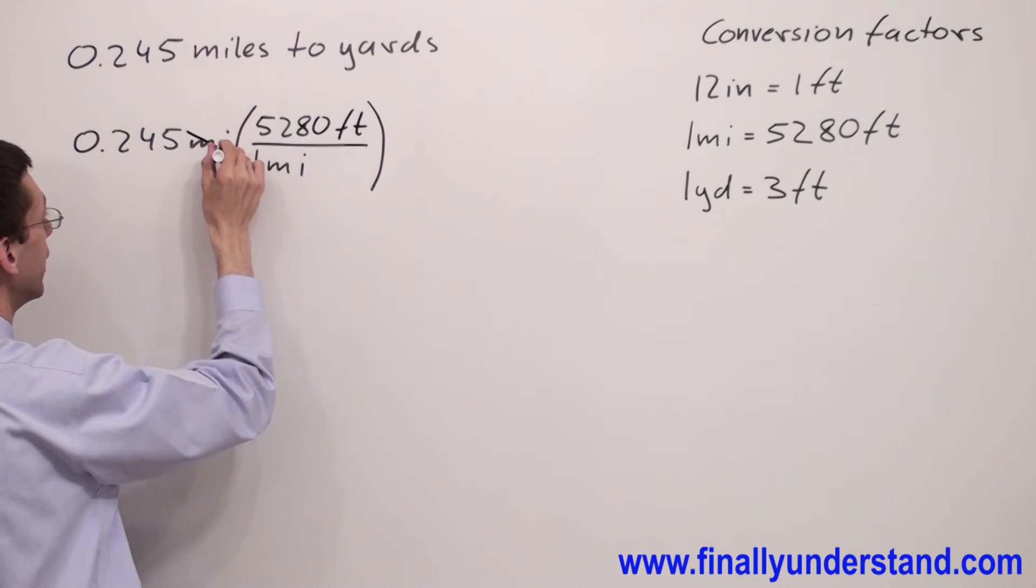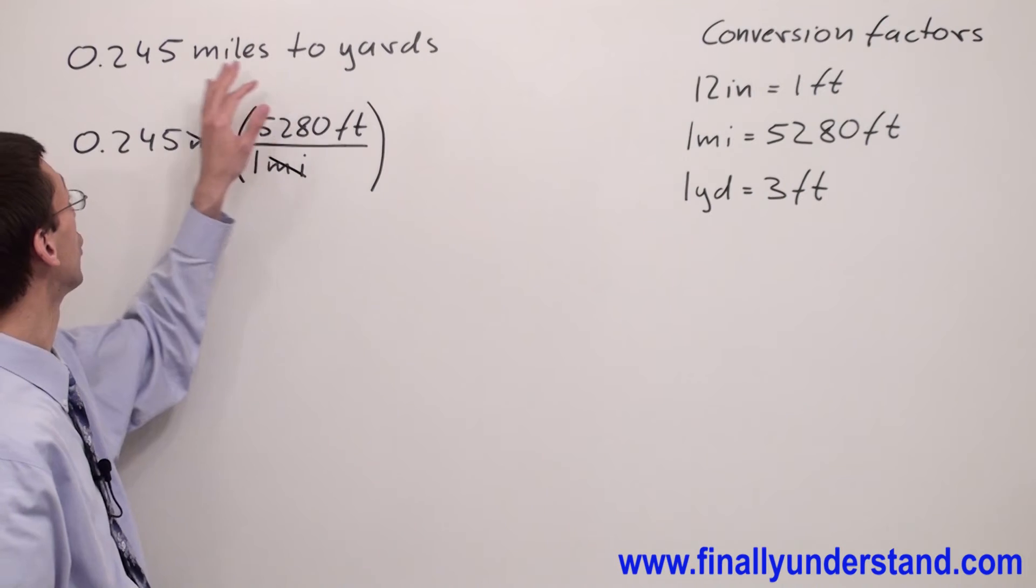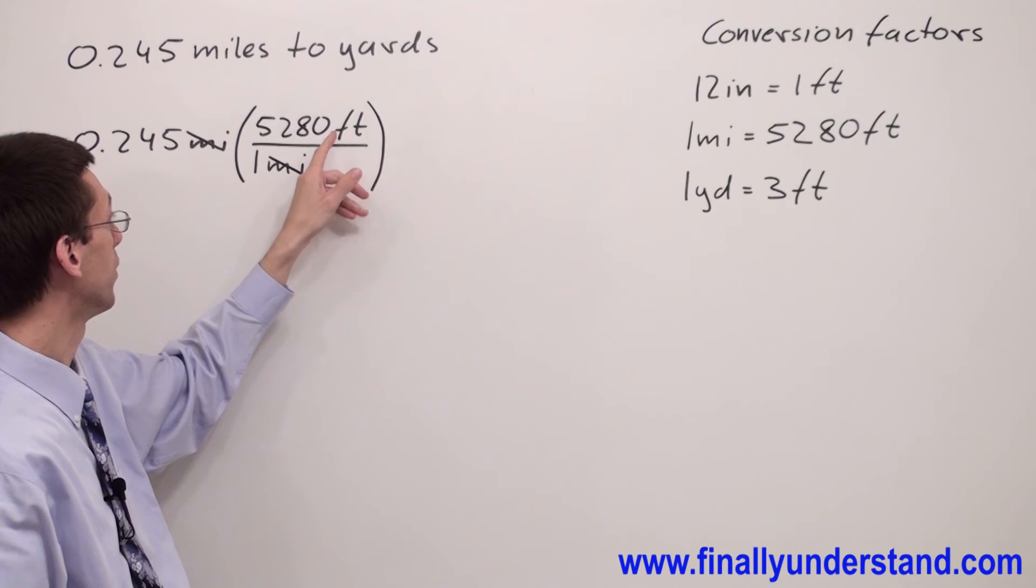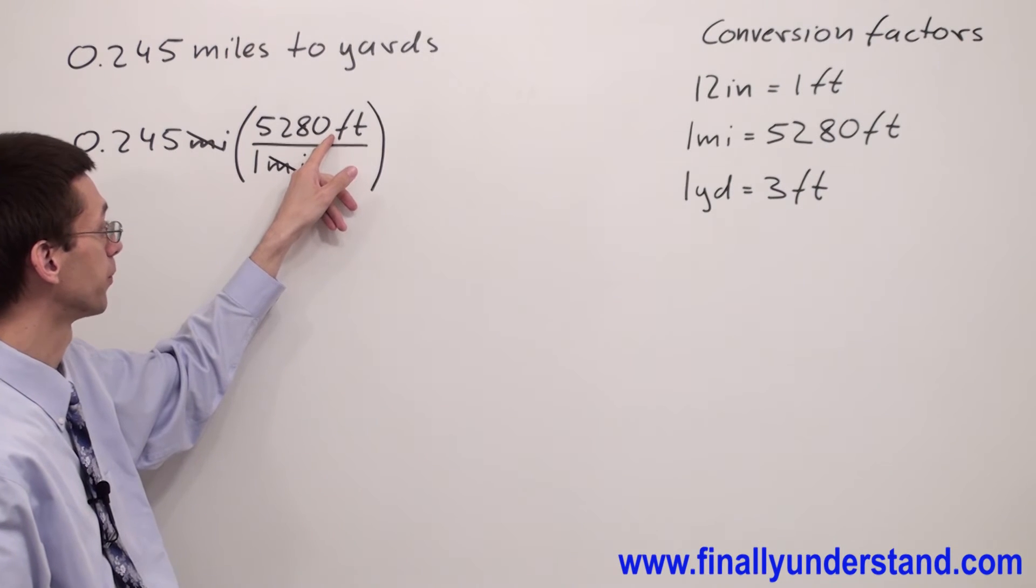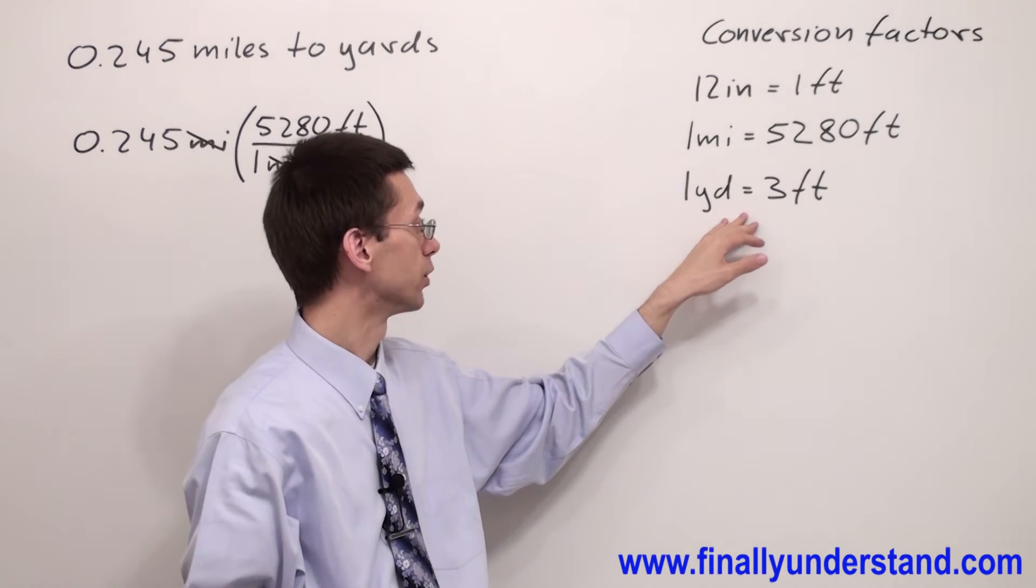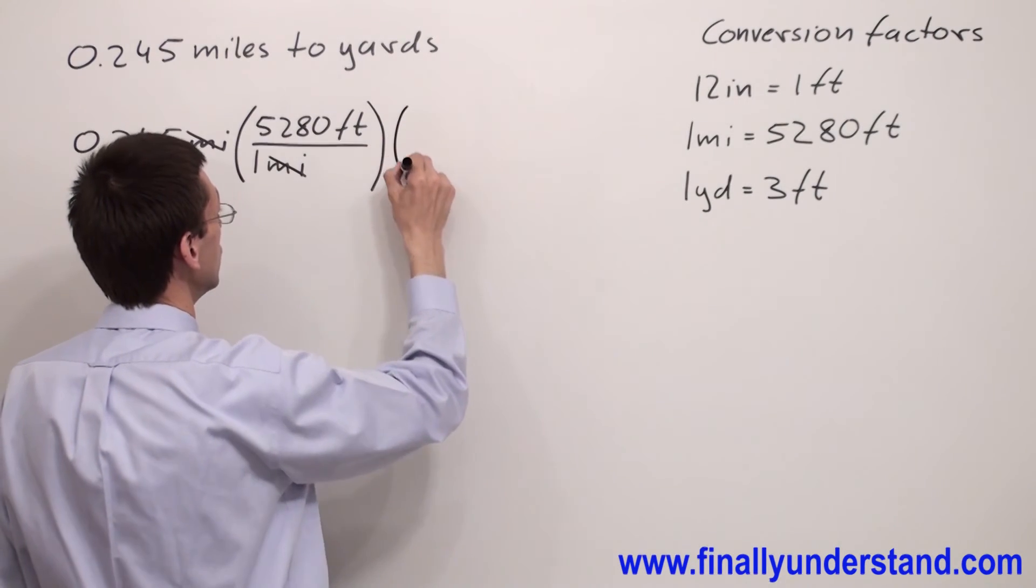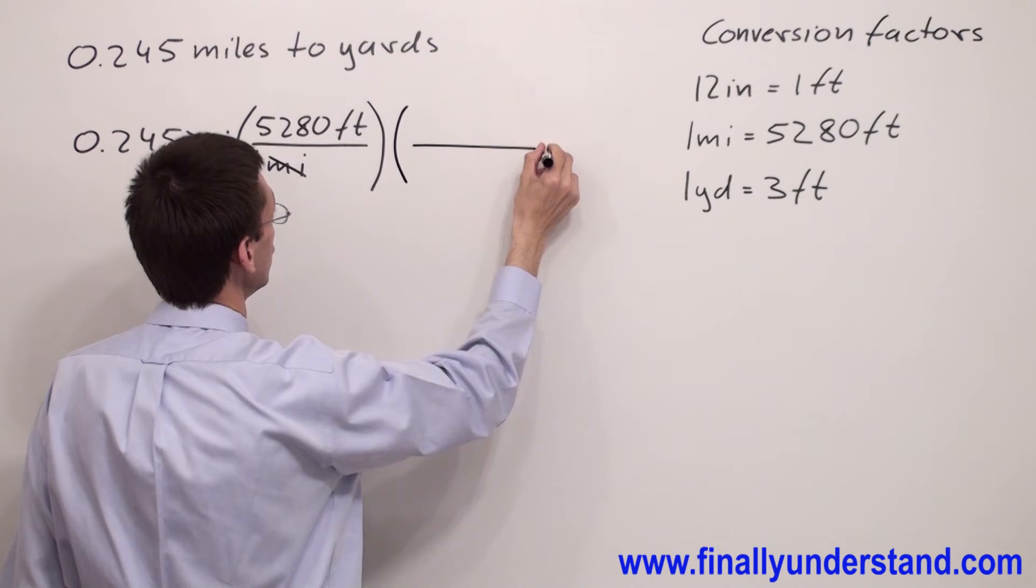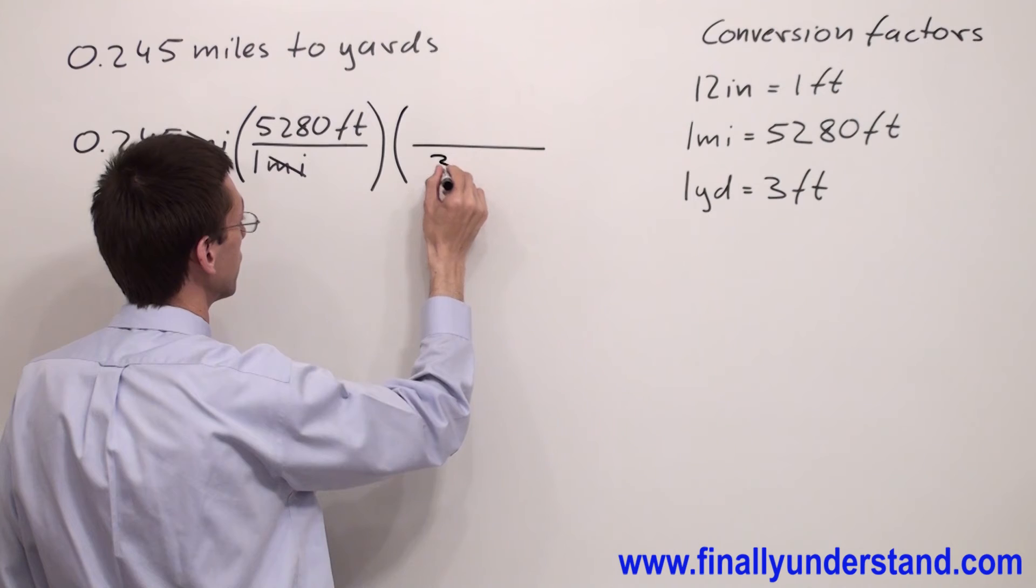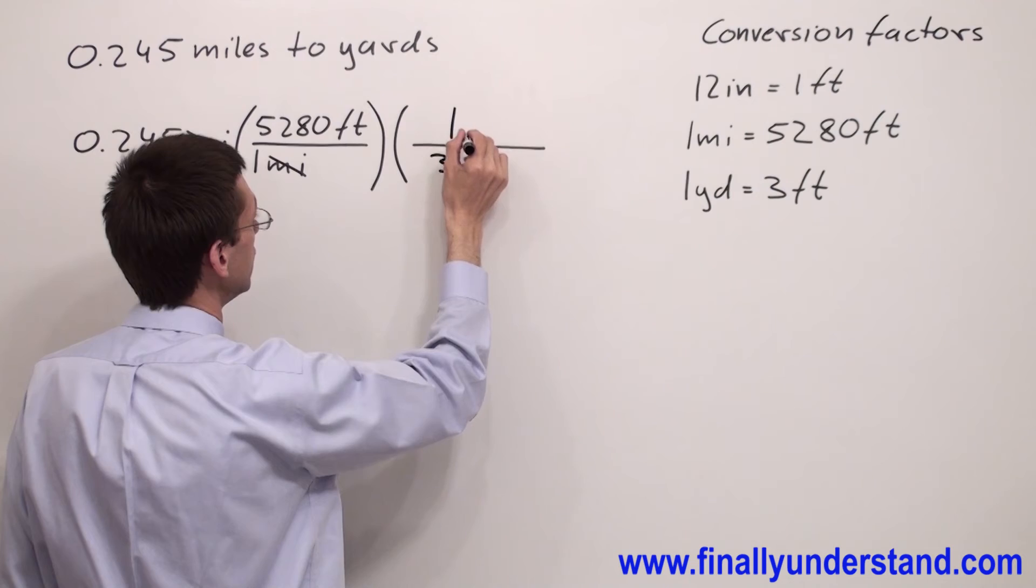So mile and mile will cancel out, but I want to convert miles to yards. I have right now my distance expressed in feet, so I have to use another conversion rate which says one yard is equal to three feet. So what I'm going to do is put feet in the denominator, three feet in the denominator, and yard in the numerator.